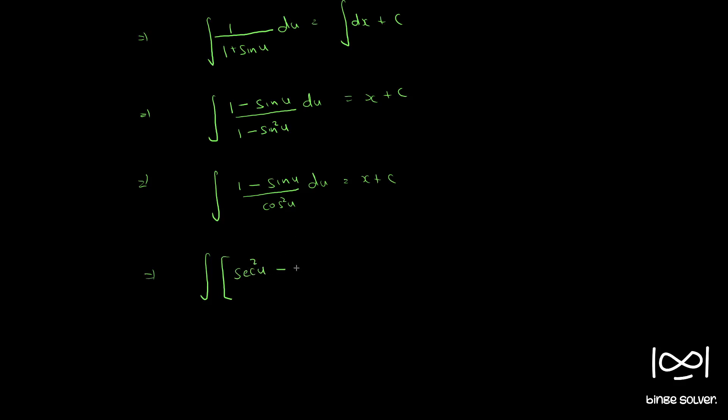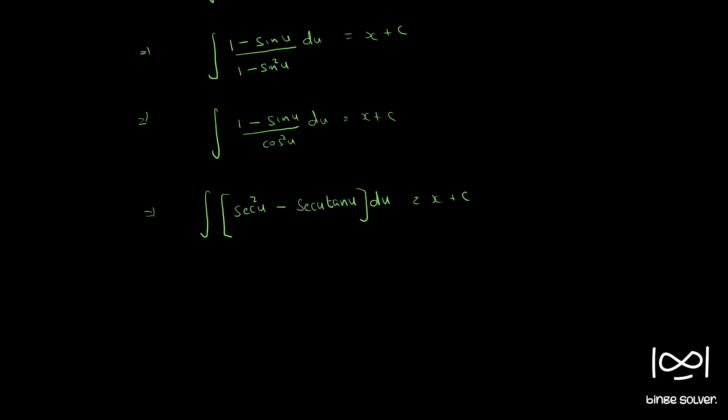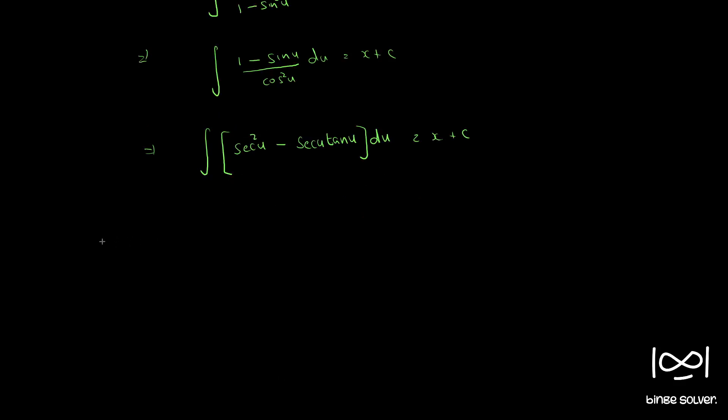So this is integral of sec squared u minus sec u tan u du equal to x plus c. Now this is easily integrable. Integral sec squared u du is tan u, and integral sec u tan u is sec u, equal to x plus c.